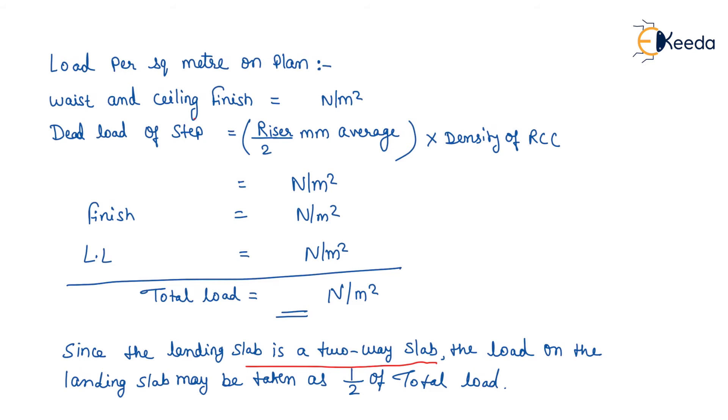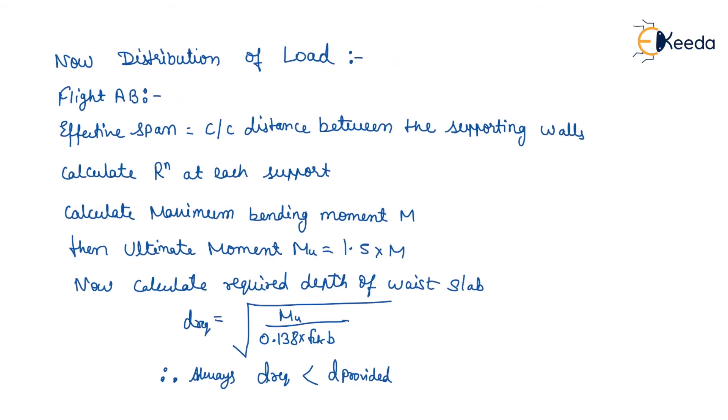Since the landing slab is a two-way slab, the load on the landing slab may be taken as half of total load. Now distribution of load will be shown in the beam.